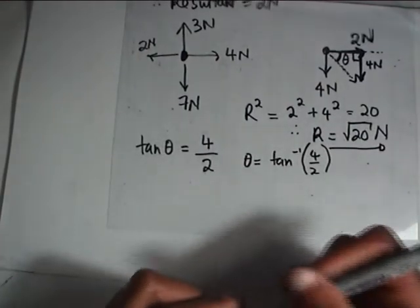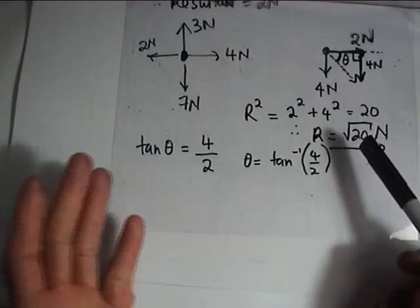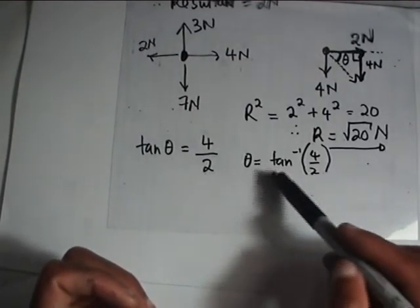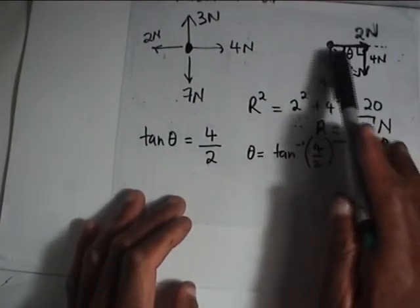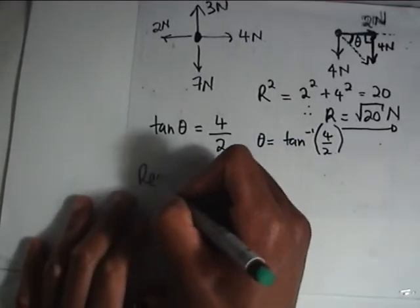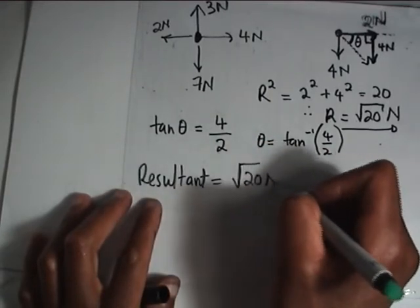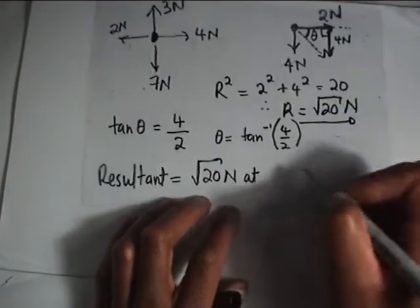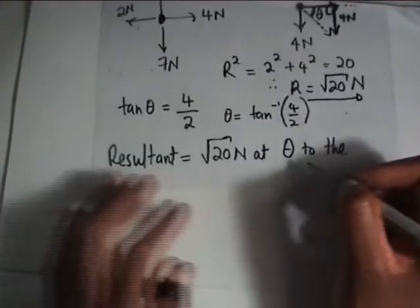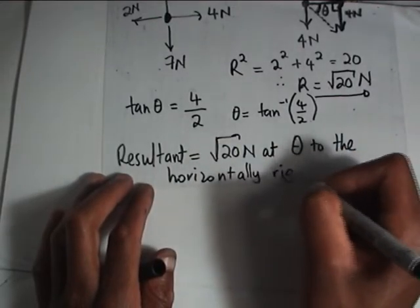So theta will be inverse tan of 4 over 2. Unfortunately, in my 3 years of doing applied mathematics, I haven't bought a calculator, so I cannot calculate the angle here. But the angle you get is where the object will move. Your answer will be: the resultant equals root 20 newtons at the angle theta toward the horizontally right direction.